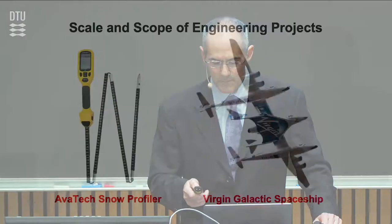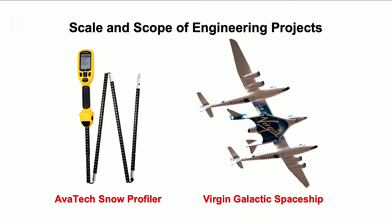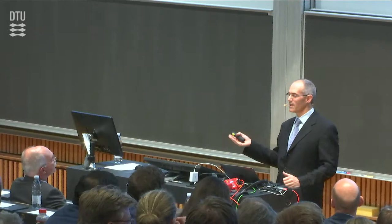I'd like to explain complexity in terms of what I think of as scale and scope. The difference between an important engineering system that is simple to develop and one that is complex to develop is essentially the scale and the scope.